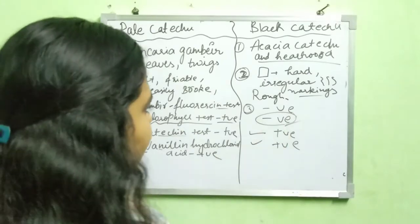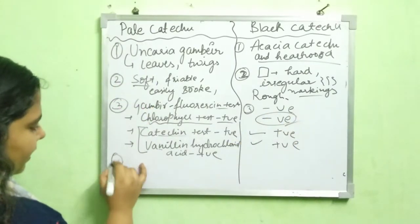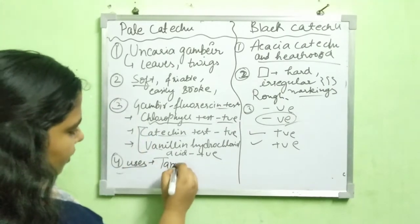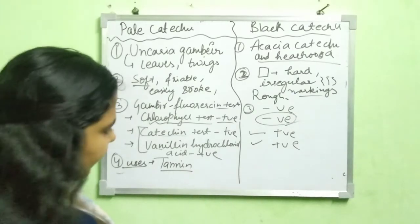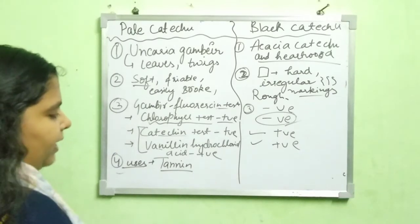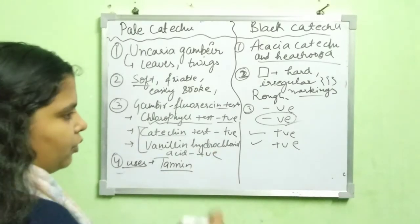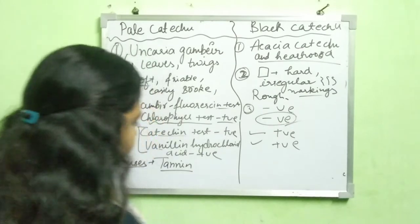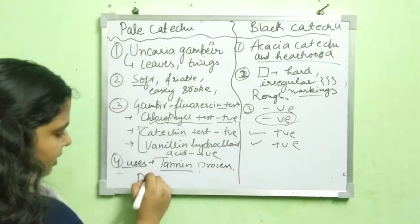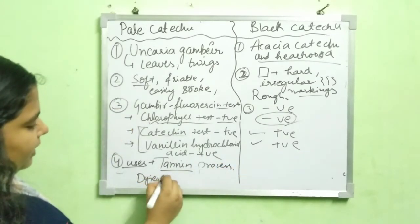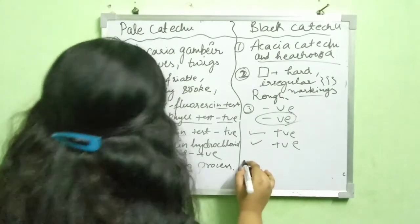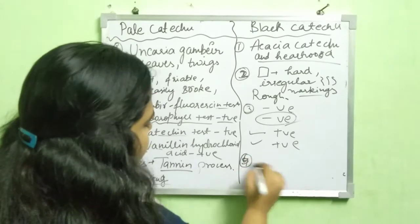The fourth point is uses. Pale catechu is used in the tannin process — it is used to convert animal hide into leather through the tanning and dyeing process. Black catechu, on the other hand, is used as a pan masala ingredient.